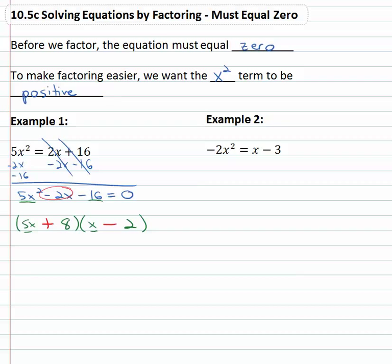And again, very important, we still equal zero. 5x + 8 times x - 2, we've now factored it. So it equals zero, then we factor it, now we can set each of the two factors equal to zero.